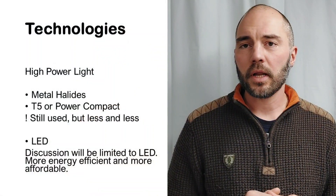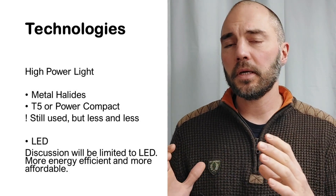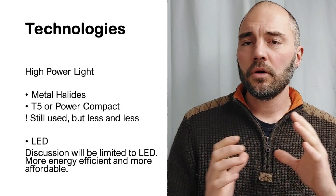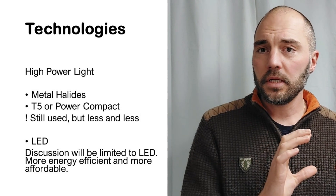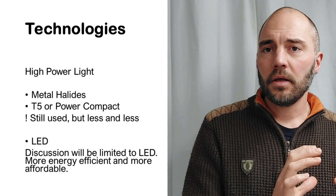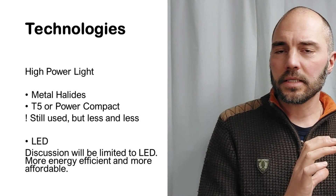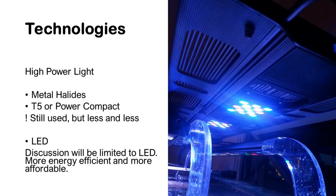What type of technologies are we typically dealing with in coral reef aquariums? Coral reefs grow in areas close to the equator where there is a lot of light and a lot of power in the light, so we mimic sunlight with high-power light systems. Historically we would look at metal halide technology or T5 and power compact solutions — these are still used, but less and less. We will focus our discussion solely on LED lighting because it's more energy efficient and more affordable currently.